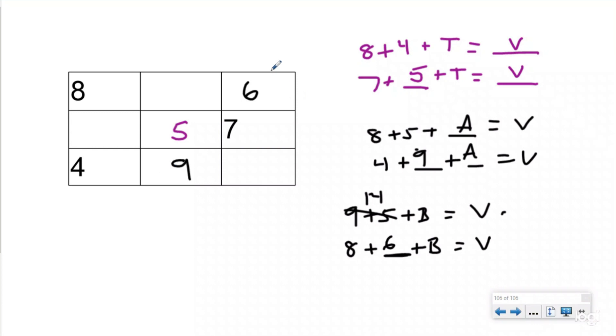And so I can add this together to figure out what v is. Six plus five is 11, plus four is going to be 15. So now I know that v equals 15. And now I can use that information to fill in all the other boxes.